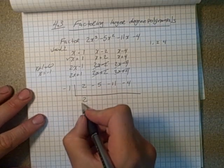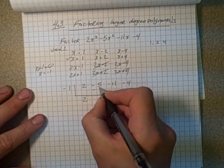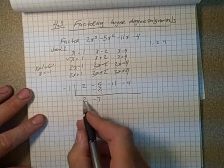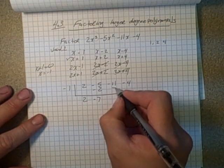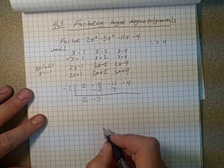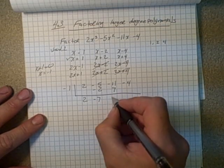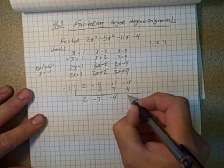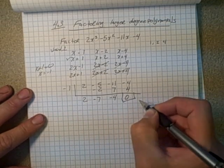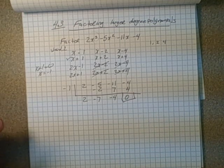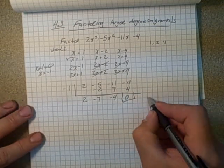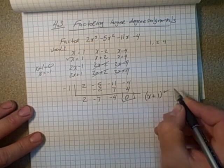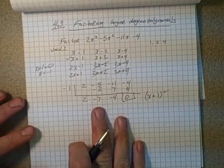Negative 1 times 2 is negative 2. Negative 2 plus negative 5 is negative 7. Negative 1 times negative 7 is positive 7. Positive 7 plus negative 11 is negative 4. Negative 4 times negative 1 is 4. So this becomes 0. So because we have yes indeed, we have a factor. So x plus 1 is one of our factors.